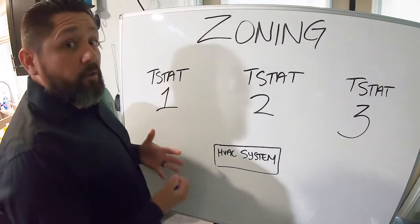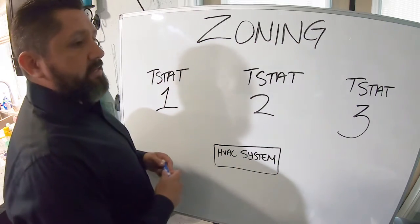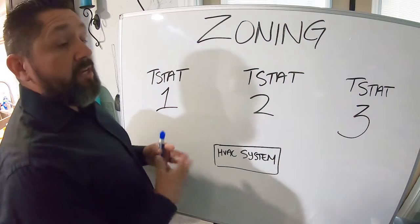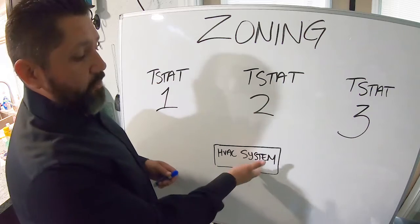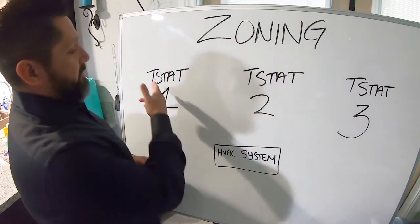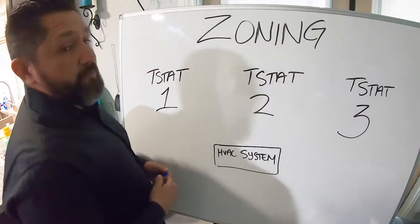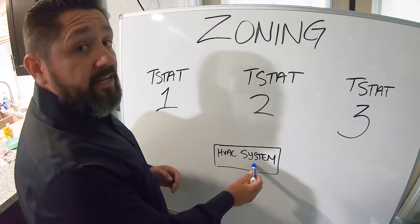Hey guys, all right today we're going to be talking about zoning. Zoning inside of a house is where you can customize where air moves inside of the house. So say you have your HVAC system right, and you have a thermostat. So T-stat is short for thermostats. You got thermostat one, thermostat two, thermostat three, but only one HVAC system.